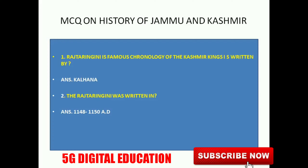First question: Rajatarangini is a famous chronology of the Kashmir kings. It was written by Kalhana, and it was written in 1148 to 1150 AD.